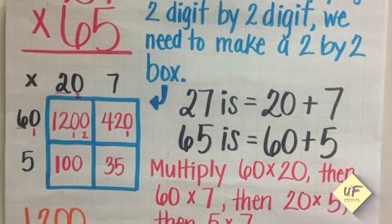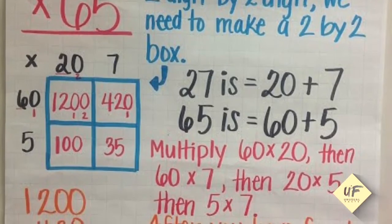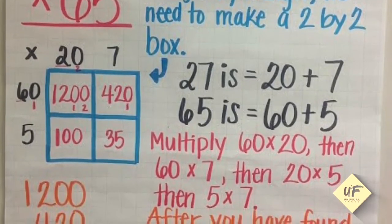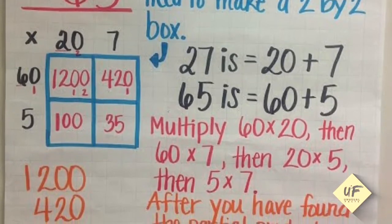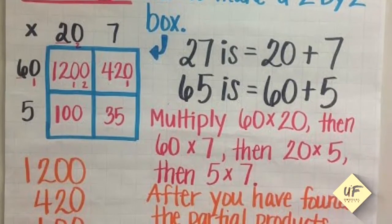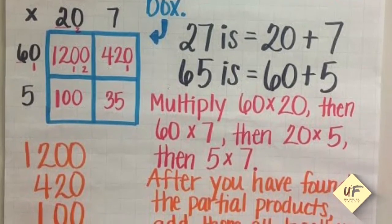What you'll need to do next is multiply 60 times 20, then 60 times seven, then 20 times five, and five times seven. After you've found the partial products, you can add them all together.